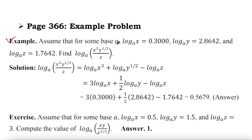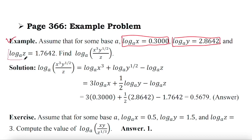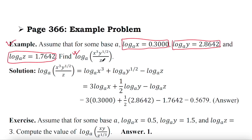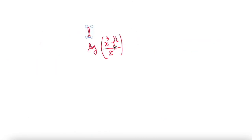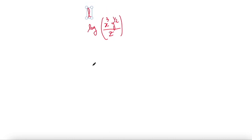Assume that for some base a, log x to the base a is given, log y to the base a is given, and log z to the base a is given — three values. You need to find the value of this logarithmic expression: log of x cubed times y to the power half, divided by z.